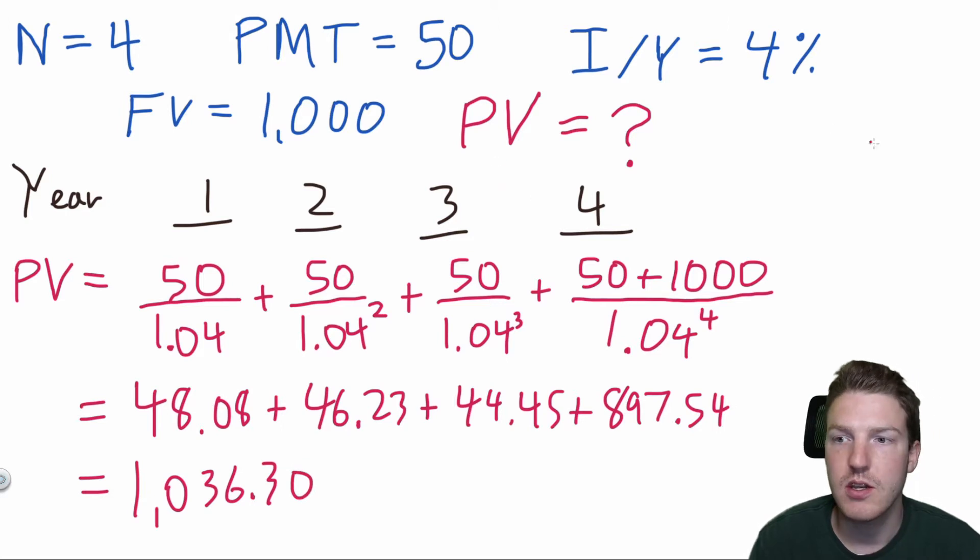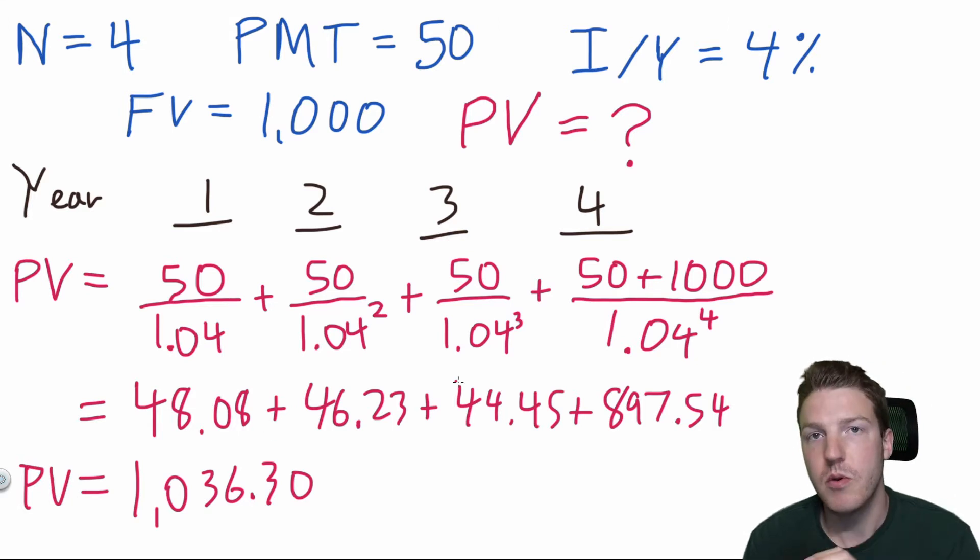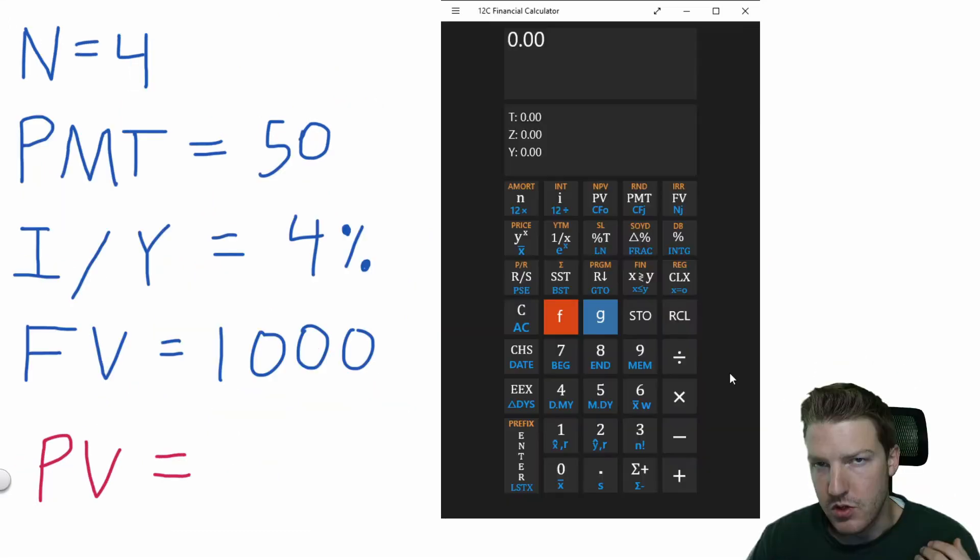Now, if you had just put that in your financial calculator at the very start and computed for present value, you would have got the exact same amount. You saw what was going on in the calculation behind the scenes, but now let's take a look at the calculator shortcut. So all we have to do is plug these four things in. So four period. We're going to hit present value and we see it's the same number as what we said before.